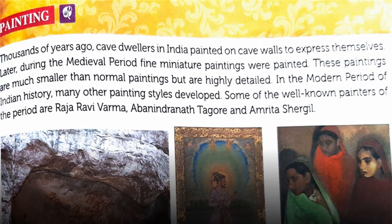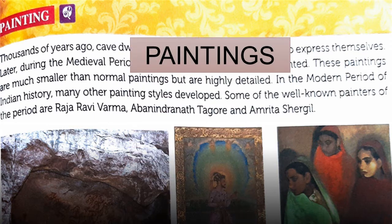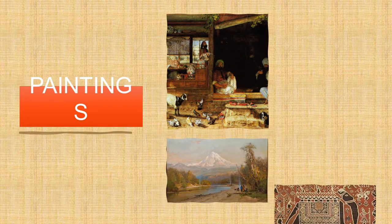Now we will study about paintings. Thousands of years ago, cave dwellers in India painted on cave walls to express themselves. In the medieval period, miniature paintings were introduced — small in size compared to normal paintings. In the modern period, new painting designs were introduced, and well-known painters include Raja Ravi Verma, Abanindranath Tagore, and Amrita Sher-Gil.